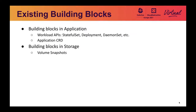So we've talked about the workflows — what exactly is there today to support these workflows? For applications, there are rich sets of workload APIs: StatefulSet, Deployment, DaemonSet, etc. There is also an application CRD which groups a set of resources together and bundles them as an application. In the storage piece, we have the volume snapshot feature, which is already GA in 1.21.